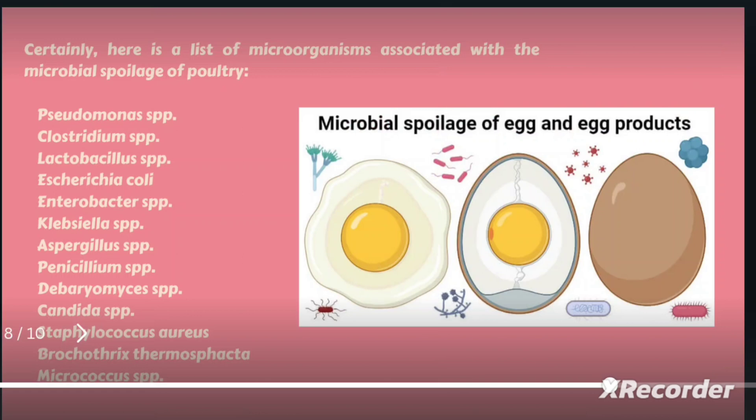These are very common bacteria reported to cause microbial spoilage in vegetables, fruits, meat, and now in poultry products: Lactobacillus species, Clostridium, Pseudomonas species, E. coli, Enterobacter species, Klebsiella, Aspergillus, Penicillium, Candida, Micrococcus, and others.